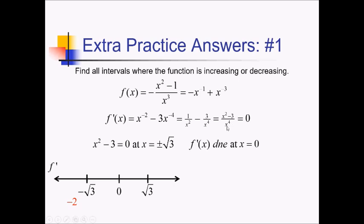All I really need to figure out is whether the numerator is positive or negative. If I plug in negative 2 to x squared minus 3, that's going to give me 4 minus 3, which is positive. Something between negative radical 3 and 0 — let's try negative 1 — negative 1 squared minus 3 is going to be negative. And between 0 and radical 3, positive 1 squared minus 3 is still negative. Then positive 2 comes out positive for the numerator, so positive for the whole thing.